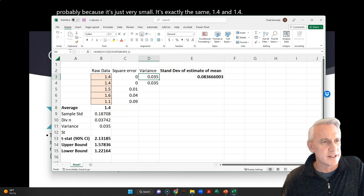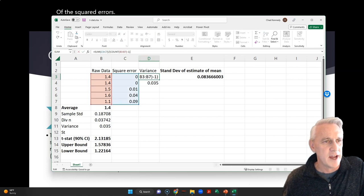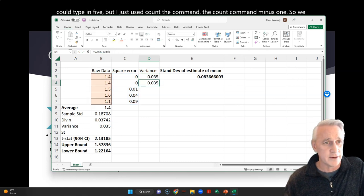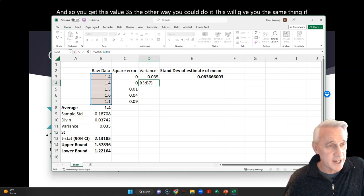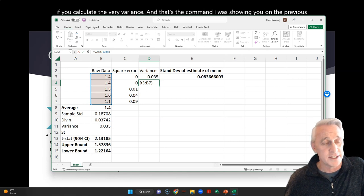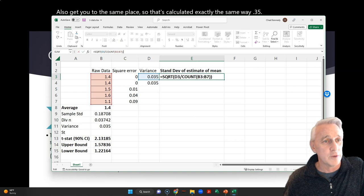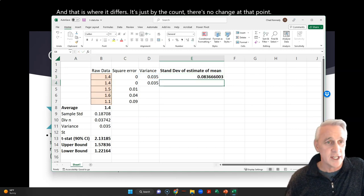Then we calculate the variance. Now, the variance is basically the sum of the squared errors, right? So it's the sum of all of these, divided by the count of all of these. So we have 5. You could type in 5, but I just used the count command, minus 1. So we actually lose one degree of freedom. And so you get this value, 0.035. The other way you could do it, this will give you the same thing. If you calculate the variance.s, and that's the command I was showing you on the previous slide, also gets you to the same place. So that's calculated exactly the same way, 0.035. The standard deviation of the mean, then, is the square root of the variance divided by the count. And that is where it differs. It's just by the count. There's no change at that point for degrees of freedom or anything like that. And that's essentially it for the standard deviation of the mean.